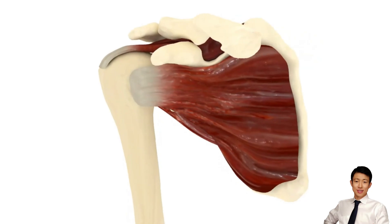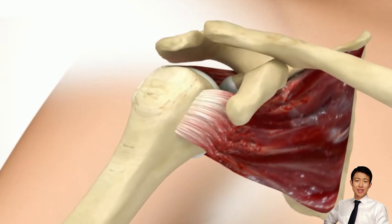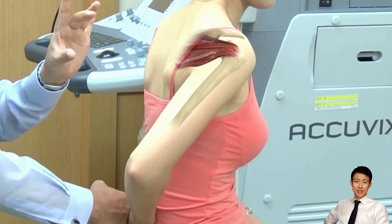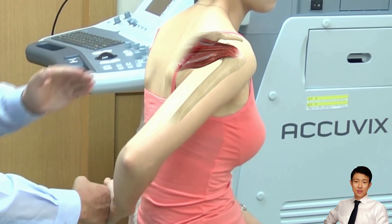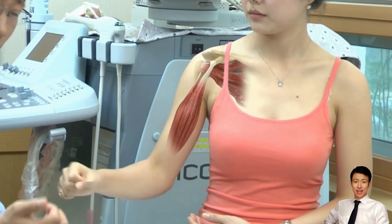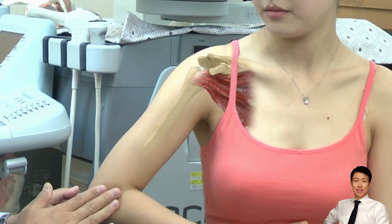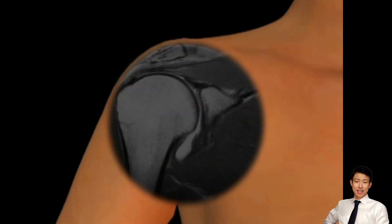Understanding the rotator cuff anatomy, including insertion patterns and biomechanical roles, is crucial for diagnosing pathology, planning surgical repairs, and preserving shoulder function. Acromion morphology — for example, hooked versus flat — can increase impingement risk. Shoulder pain may arise from either rotator cuff or biceps pathology. Clinical examination and imaging, such as MRI, are necessary for accurate diagnosis.